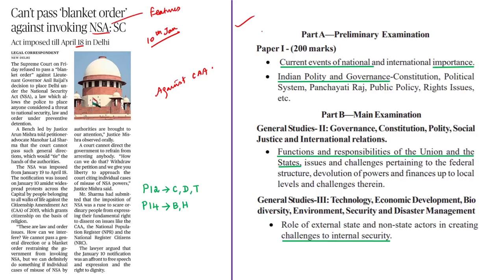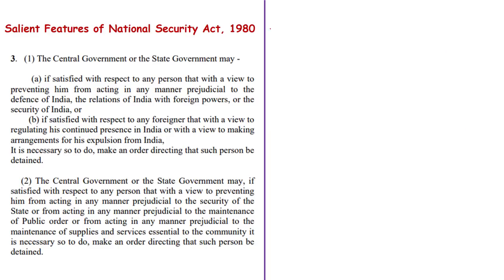Let us see the important features of the National Security Act of 1980. The National Security Act is a legislation that provides for preventive detention of persons. Preventive detention refers to detaining or arresting a person with a view to prevent him from acting prejudicial to the security of the state and some other grounds. The detained person under preventive detention is called a detainee.